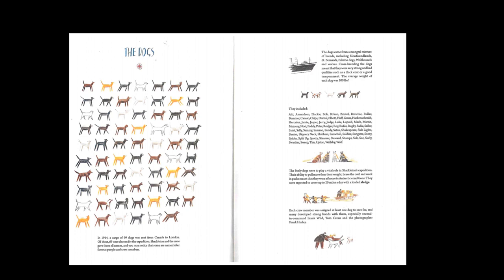Crossbreeding the dogs meant that they were very strong and had qualities that were needed, such as a very thick coat or a good temperament. The average weight of each dog was 100 pounds. So these dogs were specially bred to be very big, very strong, and have very thick coats. Think about where they're going — they're crossing Antarctica, so they're going to need to be very strong, thick-coated, and very large animals.